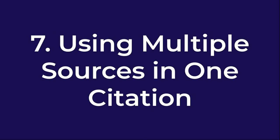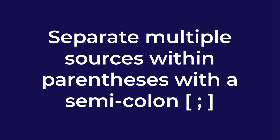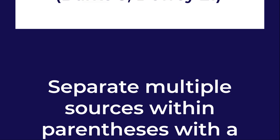Number seven: using multiple sources in one citation. To cite multiple sources in the same parenthetical reference, separate the citations within the parentheses by a semicolon. Order them the same way they appear in the works cited list, which would be alphabetically. For example: (Burke 3; Dewey 21).